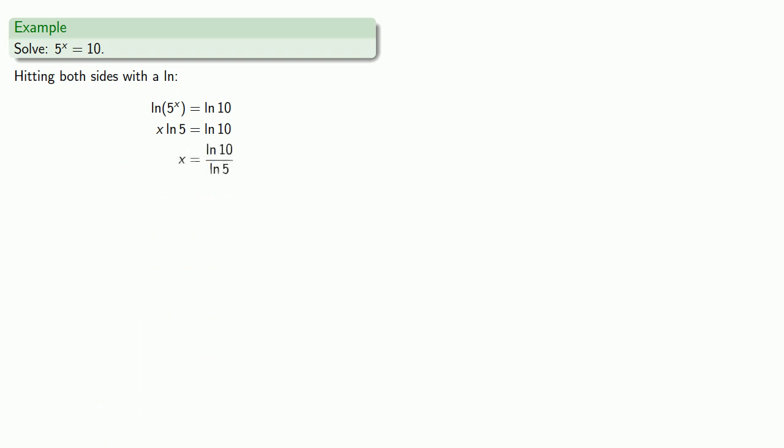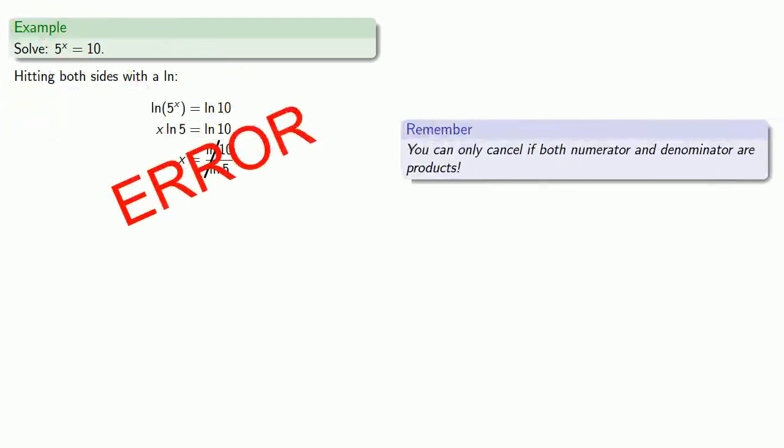It's important to recognize that log 10 and log 5 are real numbers. We might not know what the values are, but they have very definite values. Finally, we could cancel out the logs, but that would be wrong. Remember you can only cancel if numerator and denominator are products.